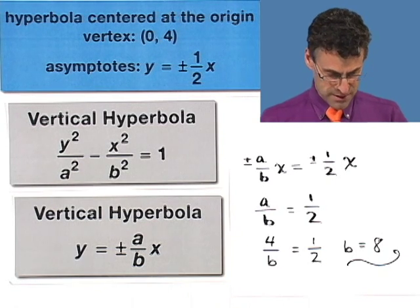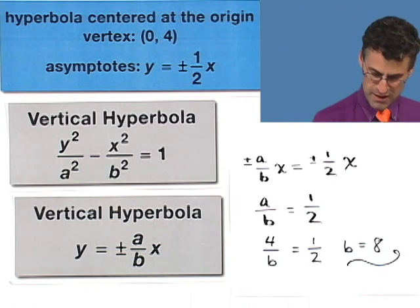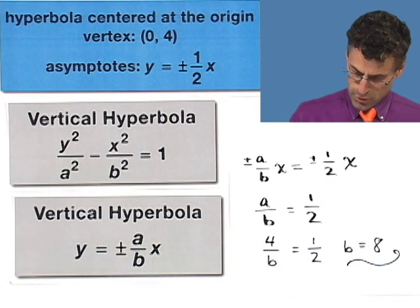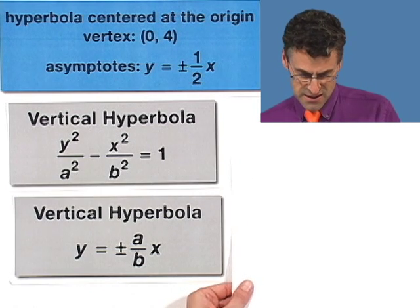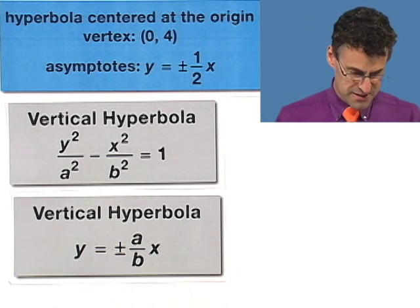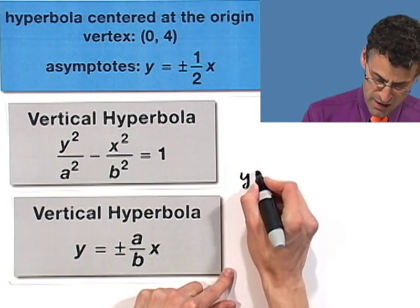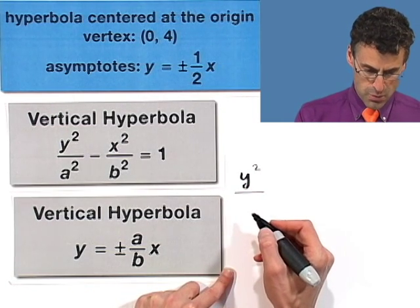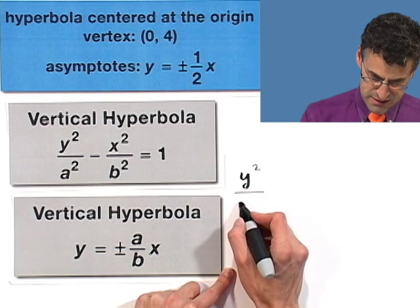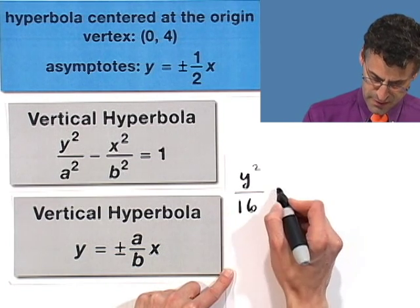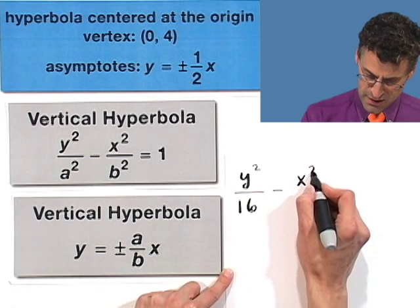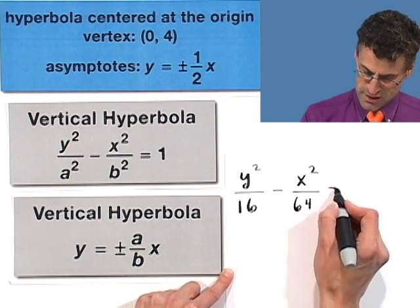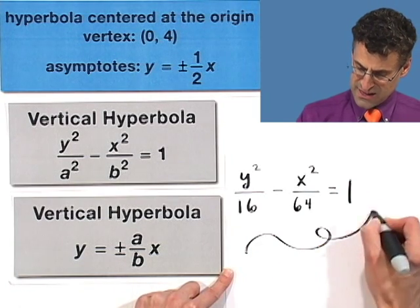Well, great. Well, that's the end of the story, because I now know the formula. The formula is, I already knew that the a is 4, and now I discovered that the b is 8, and so I plug into the formula, and I see, since it's vertical, I start with y, y²/4² which is 16, minus x² over b² which is 64, equals 1. That is the formula.